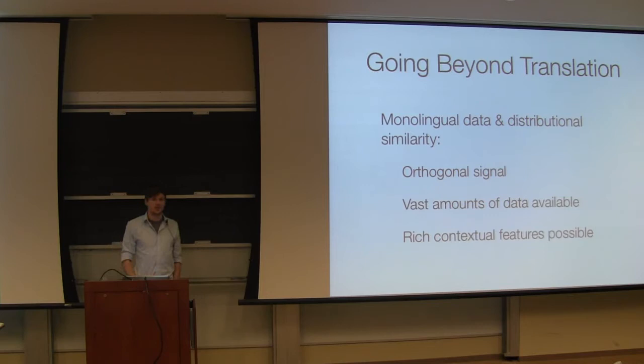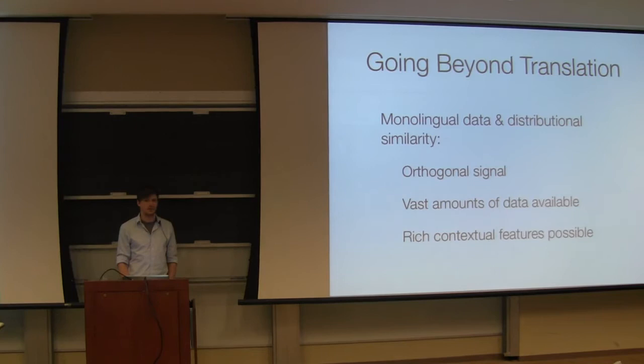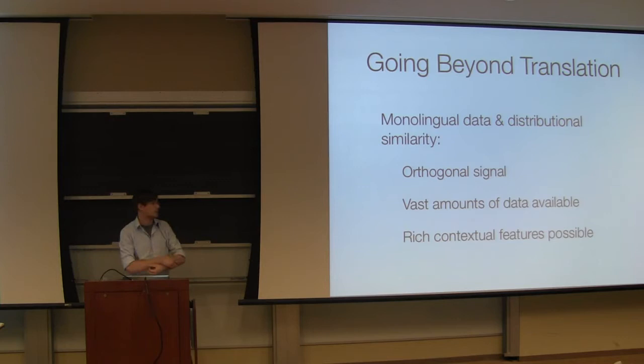So far, we've basically used machinery and approaches very similar to translation. We build an English-to-English synchronous context-free grammar and apply statistics derived in translation manners collected over the bitext. Now to improve the system, we're going to add an orthogonal signal derived from monolingual text. The advantage is it's virtually unlimited. You can just go on the internet and start downloading everything, and you can easily annotate it with rich contextual features.